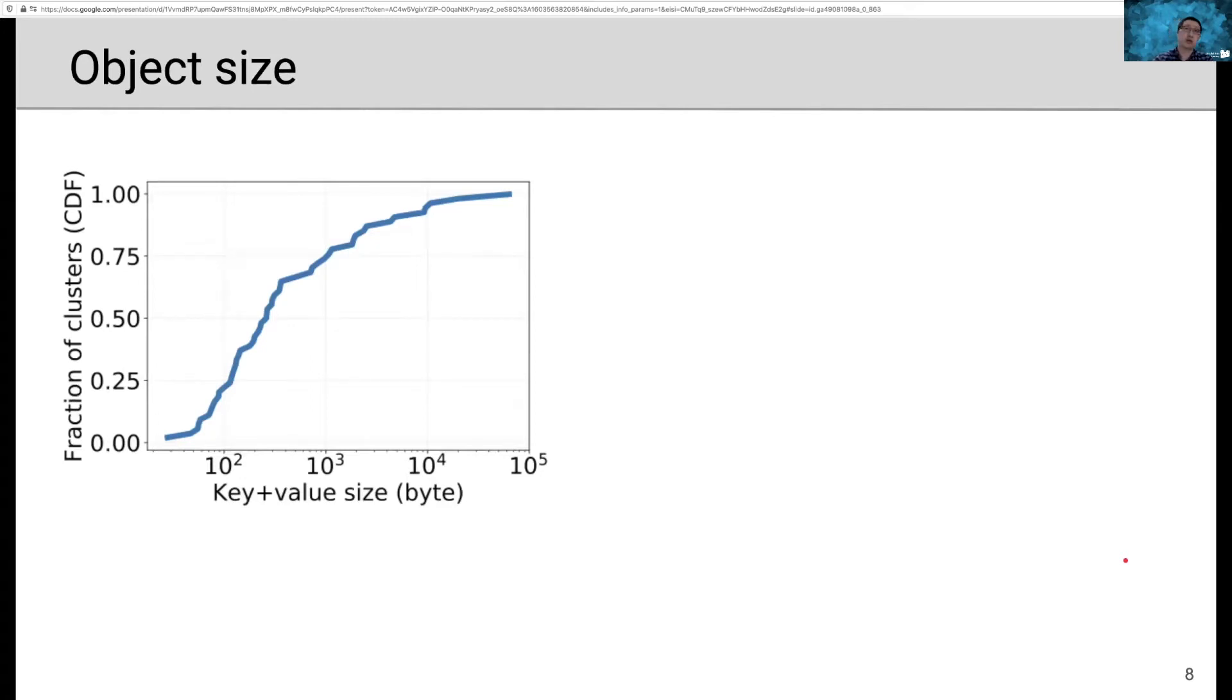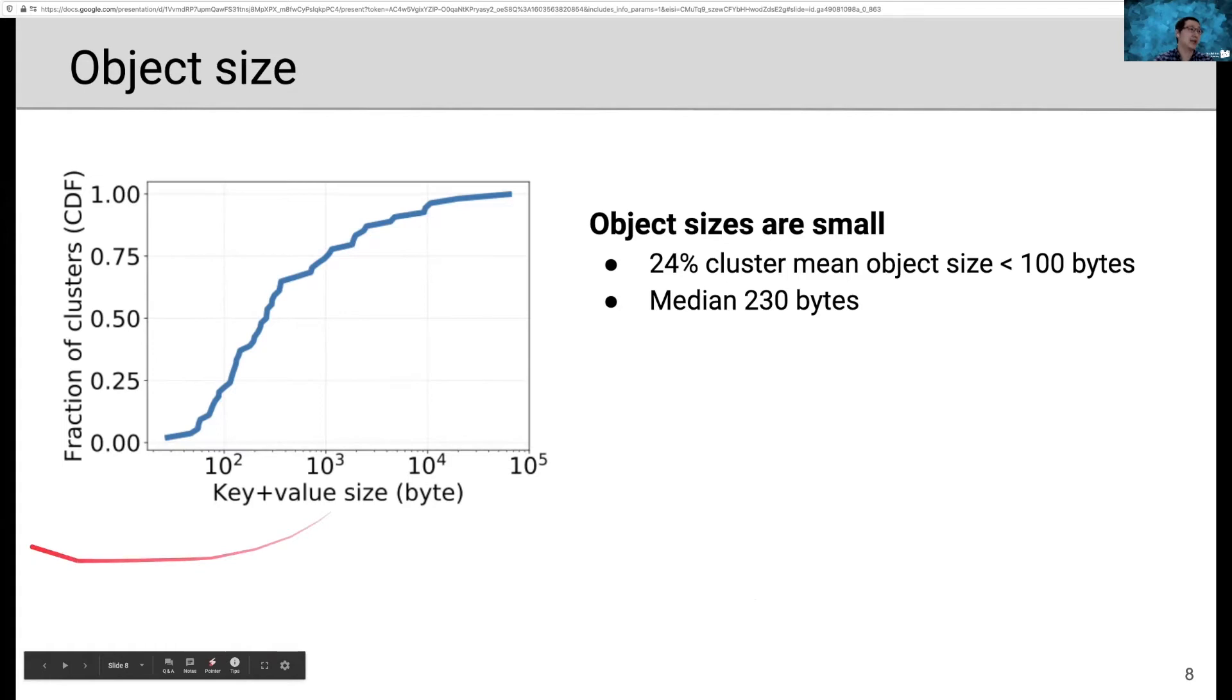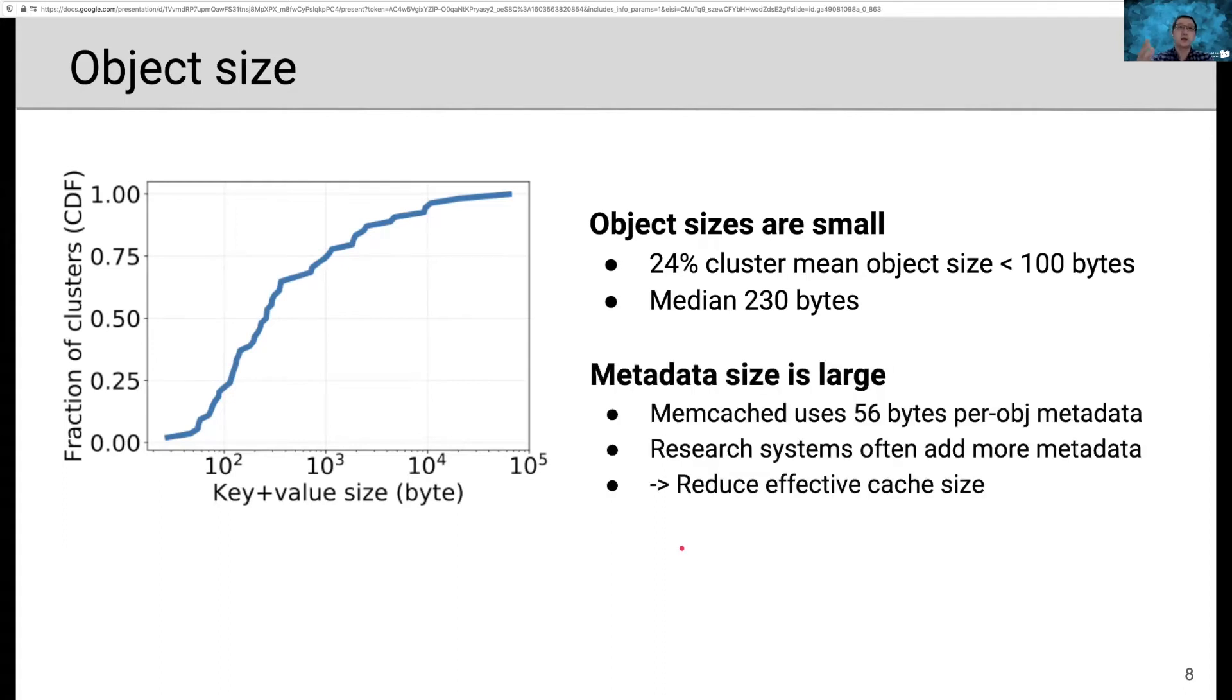Previous work has shown that object size in memory cache are usually small. At Twitter, we confirmed this observation and we observed that 20% of clusters have a mean object size less than 100 bytes. And the median is around 230 bytes. This figure shows the mean object size across clusters. In other words, object size in memory cache are small. It means that the metadata size is relatively large compared to object size. For example, production systems like memcached uses 56 bytes per object metadata. This is huge compared to 230 bytes object.